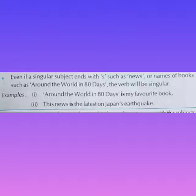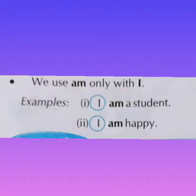We use 'am' only with 'I' in present tense. In simple present tense, 'am' is always used with 'I.' For example: 'I am a student.' 'I am happy.' 'Am' is always used with 'I.'